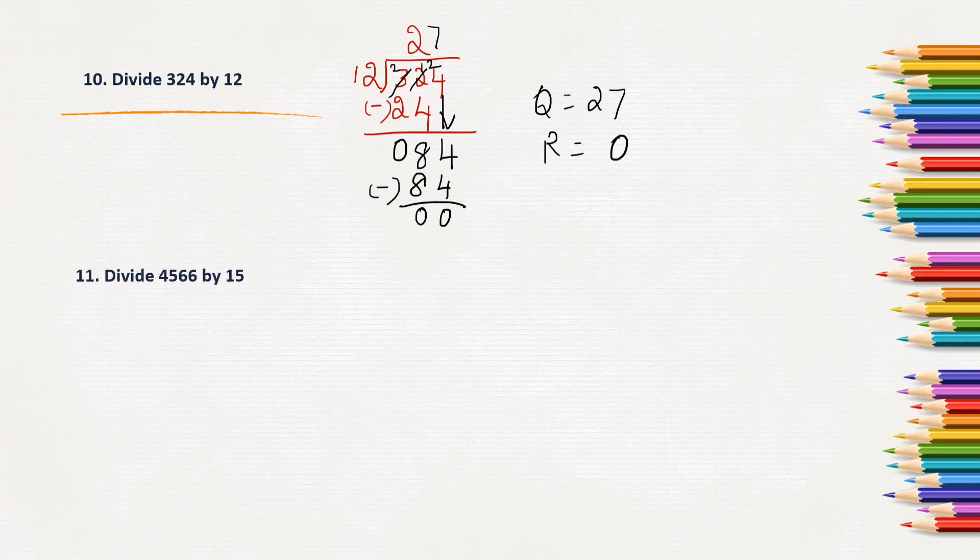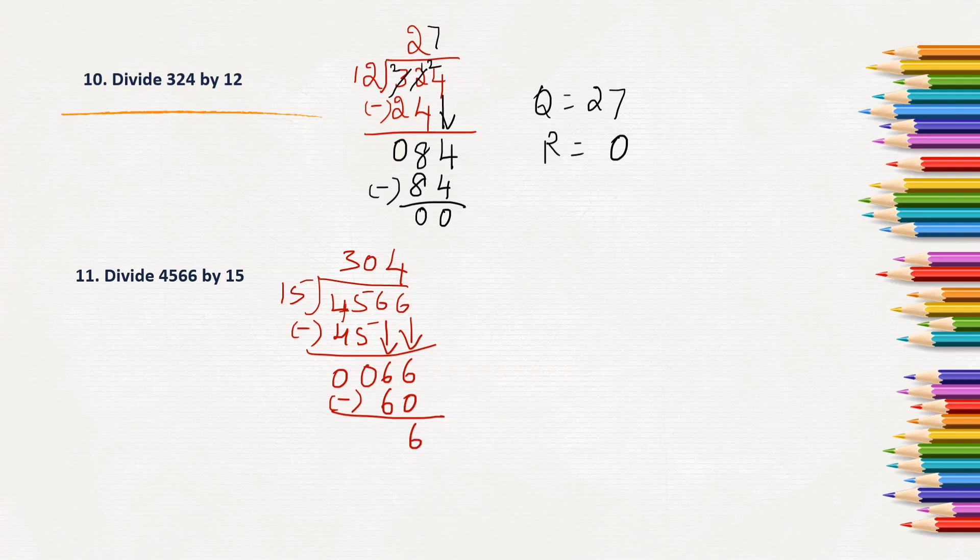Next, divide 4566 by 15. Again, 4566 will write inside the division bar and 15 outside the division bar. 15 times 1 is 15. 15 times 2 is 30. 15 times 3 is 45. 5 minus 5 is 0. 4 minus 4 is 0. Bring down the 6. As 6 is less than 15, we will write 0 in the quotient space. And bring down 6. 15 times 4 is 60. Here the quotient is 304 and the remainder is 6.